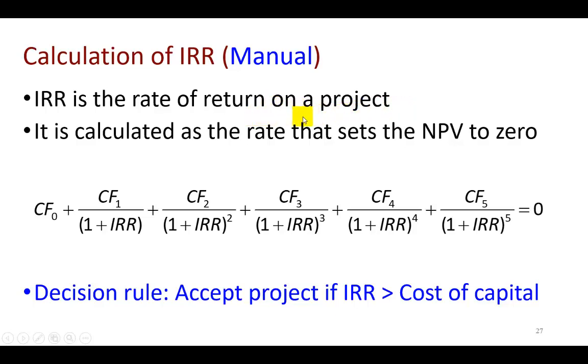And it is calculated as that discount rate that sets the net present value equation, which is what you see right here, equal to zero. Essentially, what you're going to be doing is substitute the cash flows from the project over whatever the period of the investment is and then solve for the discount rate, which turns out to be the internal rate of return.